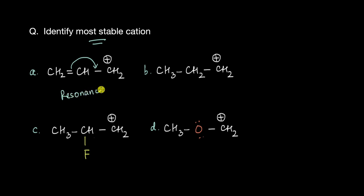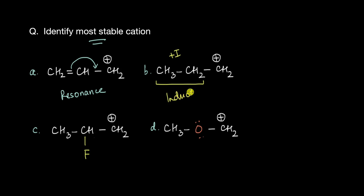This cation can be stabilized via resonance. Now if you look at cation B, there aren't any pi electrons or lone pairs attached to the cation, so there can't be any resonance. It can only be stabilized by the inductive effect — the plus-I effect of the ethyl group. Since resonance effects are stronger than inductive effects, A is definitely more stable than B, so B is not the most stable cation.